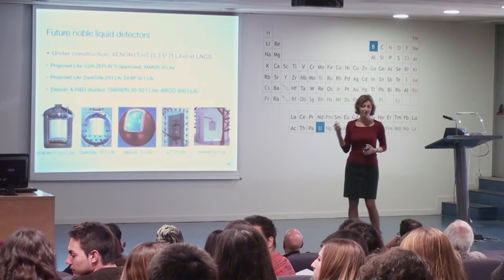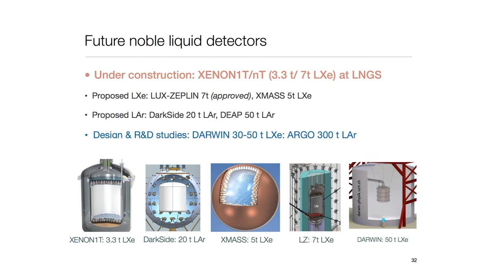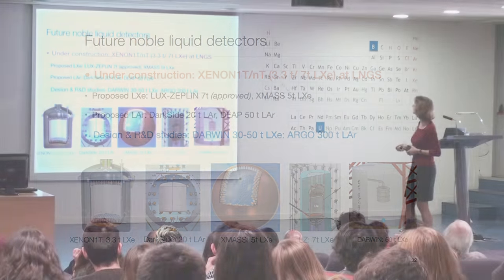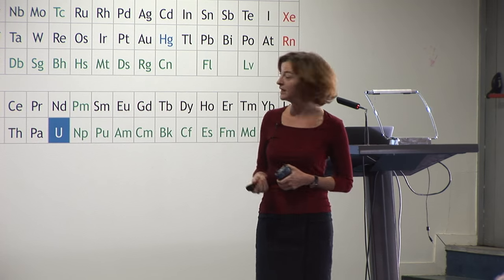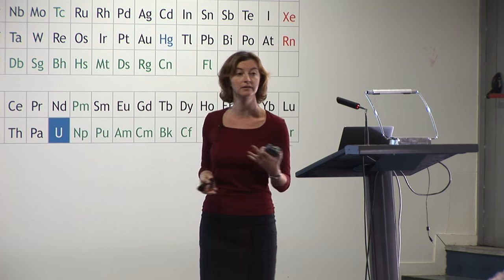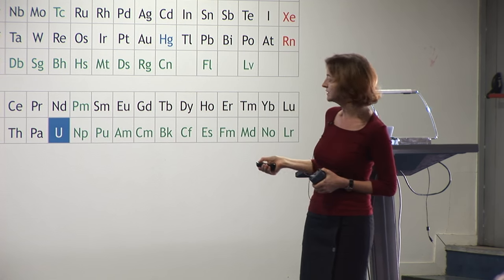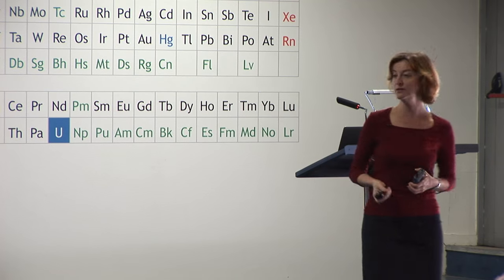What is the future for noble liquid detectors? Under commissioning now is XENON1T, with the next phase being XENONnT in Gran Sasso. There is also LZ — the biggest competitor — approved in the US, using 7 tons of liquid xenon. There is also a proposal for a 5-ton experiment in Japan. For argon, there's a proposal for a 20-ton detector in Gran Sasso and a 50-ton DEAP detector at SNOLAB. Finally, we are involved in the DARWIN design study, which would operate a 30 to 50-ton liquid xenon detector for dark matter and also other physics.